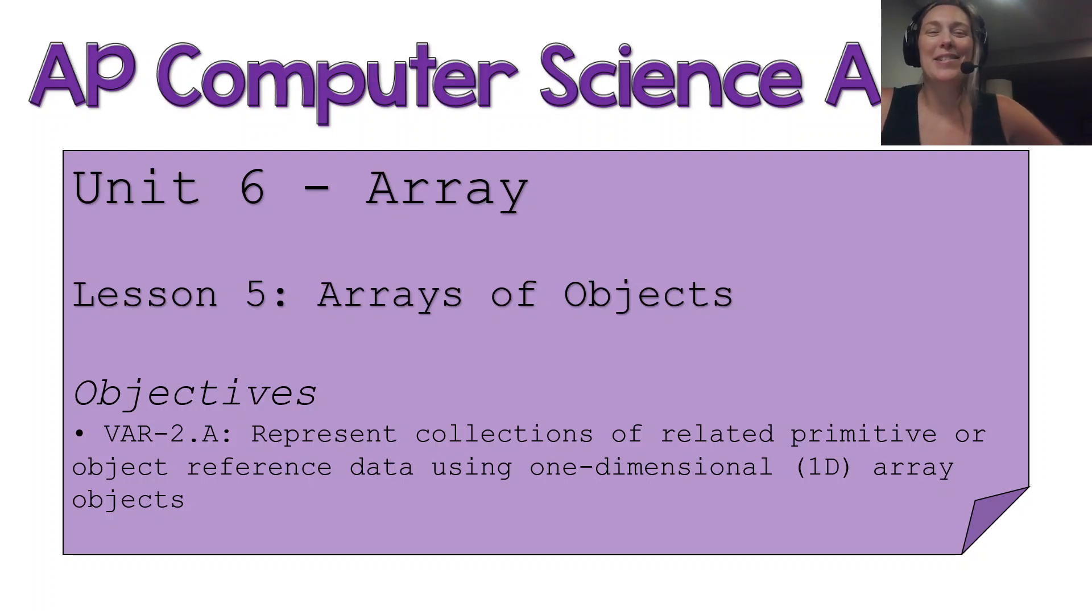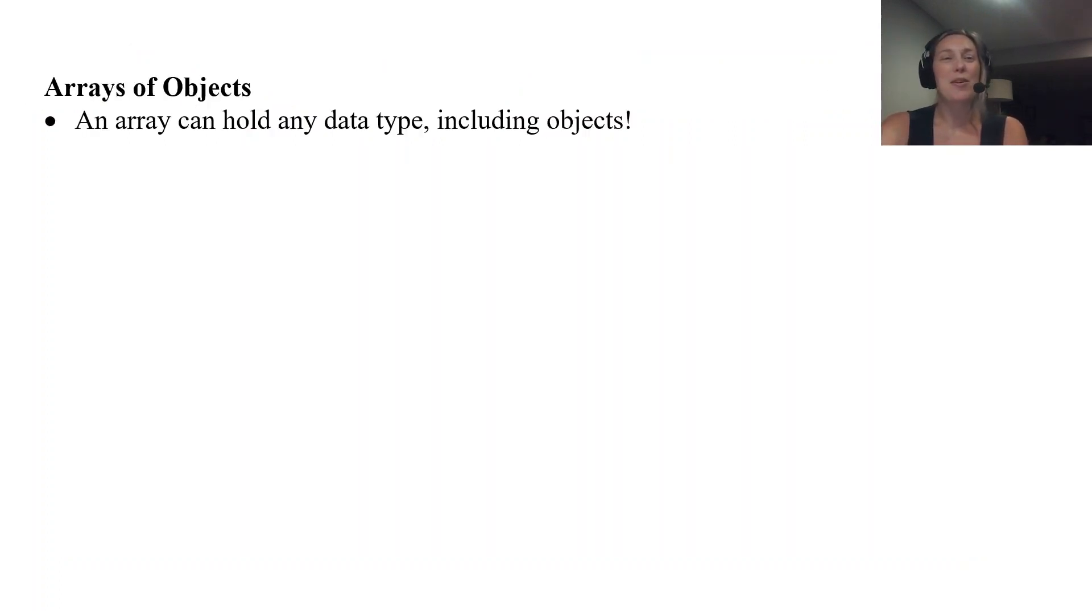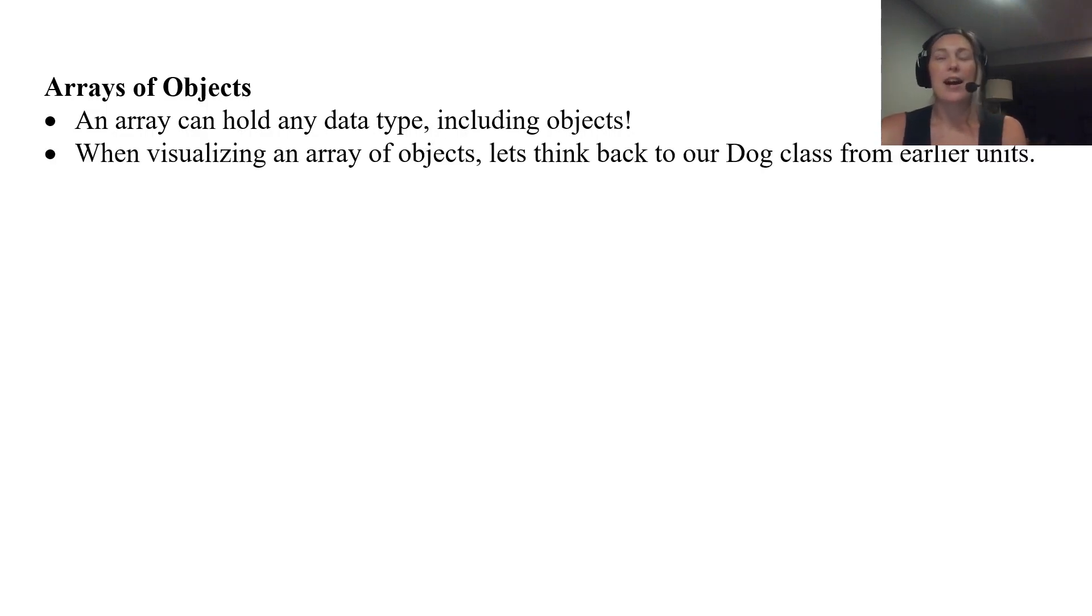Hello, my beautiful computer science students. Welcome to our last lesson in unit 6. This lesson is going to talk all about arrays of objects. We've talked about how arrays can hold any data type, but we haven't specifically seen how they hold objects yet. We've seen how they hold integers and strings, but not object references that we've made. That's what we're going to go over in today's lesson. In this example, I want to think back to our Dog class from our earlier units.